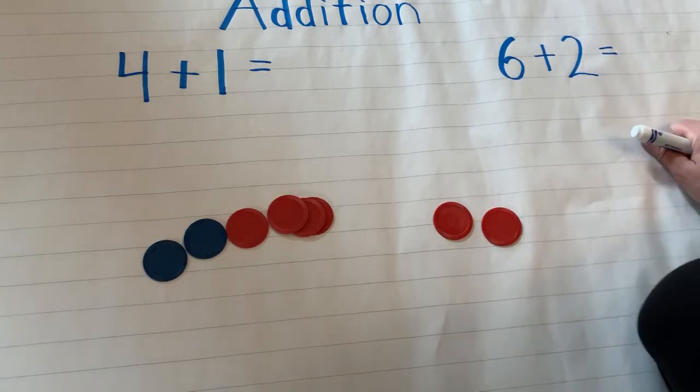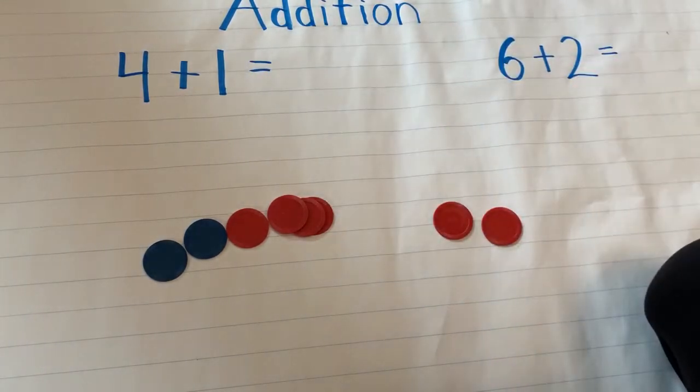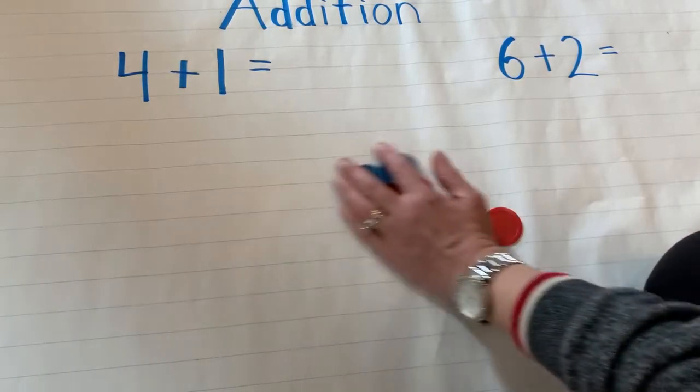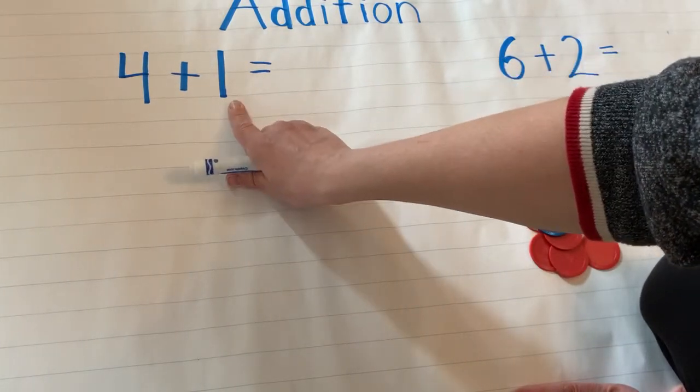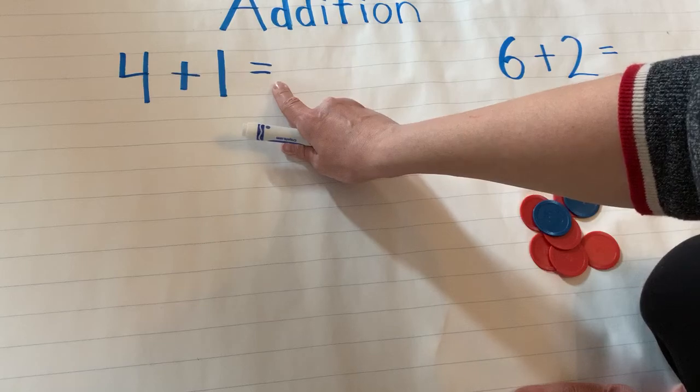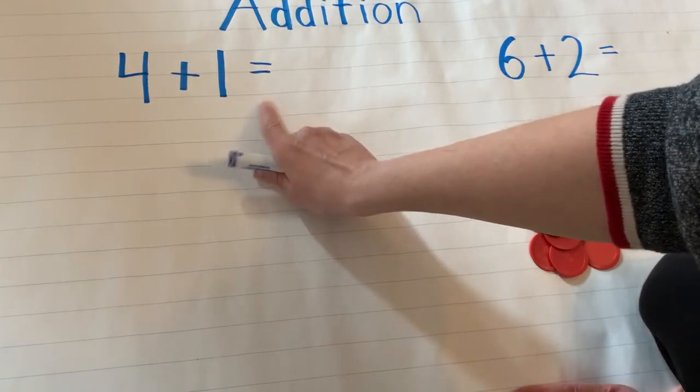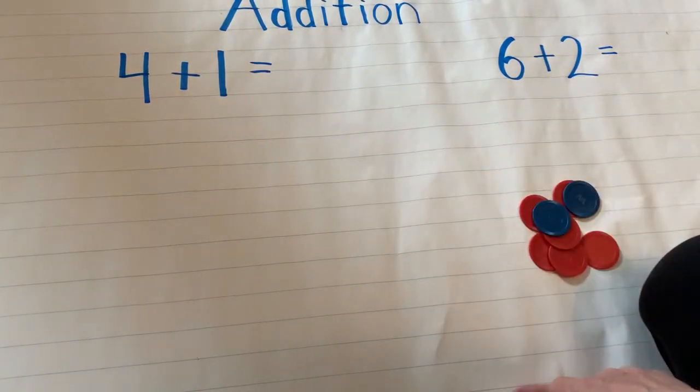So today I wrote a couple of these. What are these called again? They are called number sentences. So here we have the number four, the symbol plus one, and the symbol equals. Four plus one equals. That is called a number sentence.